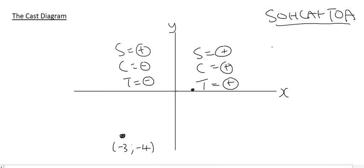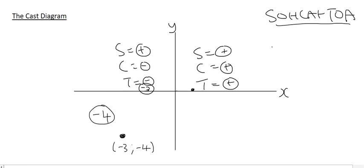Moving to the third quadrant, we have minus 3 here and 4 units down. The length is 3 but we'll write minus 3 to remind ourselves it's in the negative x direction, and the vertical length is 4 but we'll call it minus 4. Some teachers get a bit uptight about that, but most teachers use the minus 3 and minus 4 method. We can make ourselves a little right-angle triangle.